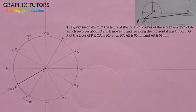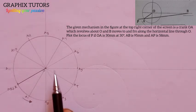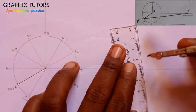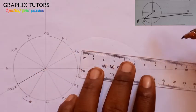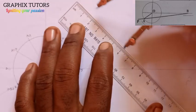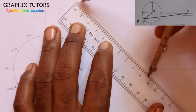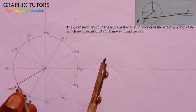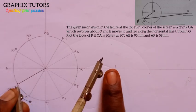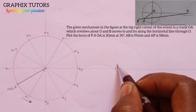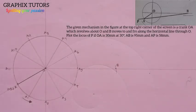Now the next thing: we are told that AB is 95mm. So from point A to somewhere along the horizontal line is point B. I take my meter rule and compass, measure 95mm — from zero straight down to this point is 95mm — and place it at A, marking somewhere along the horizontal line. That point where it hits the horizontal gives us point B.